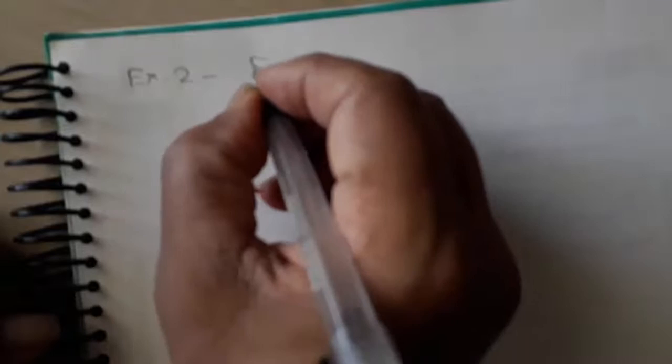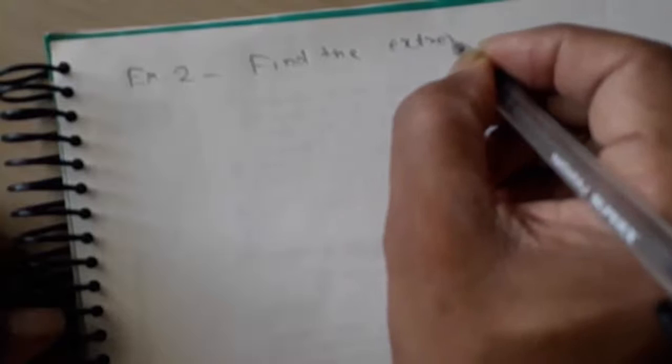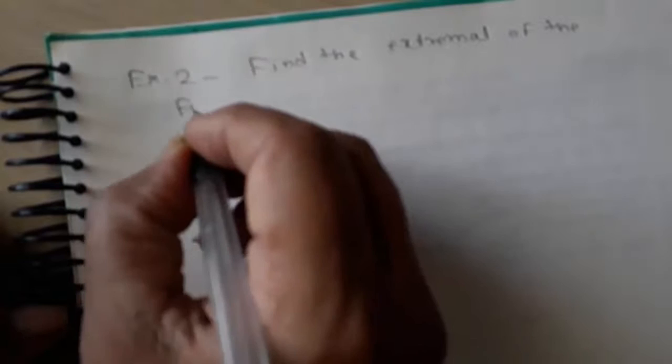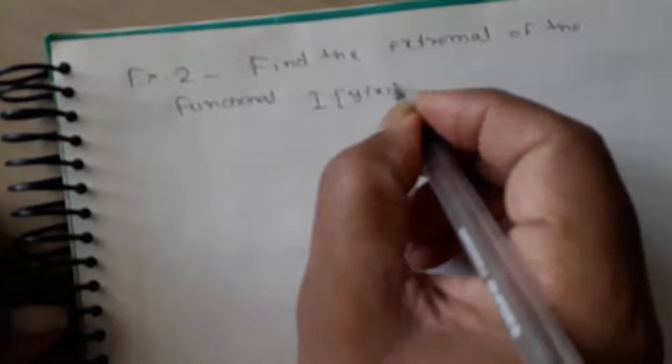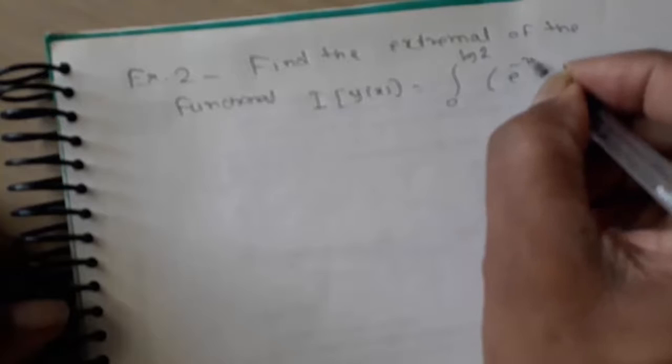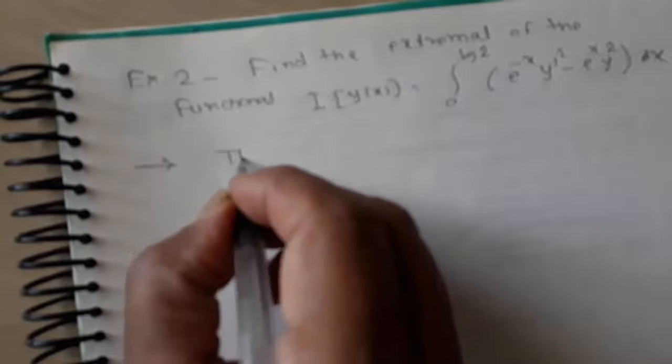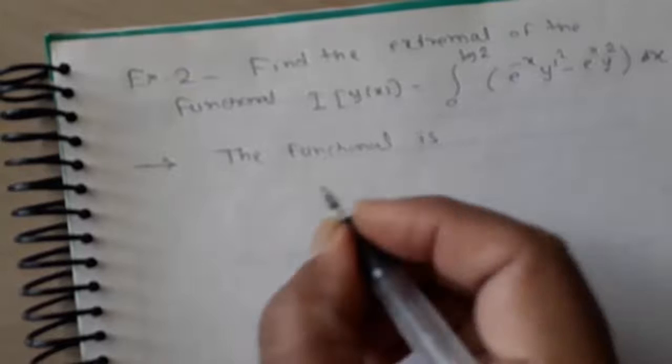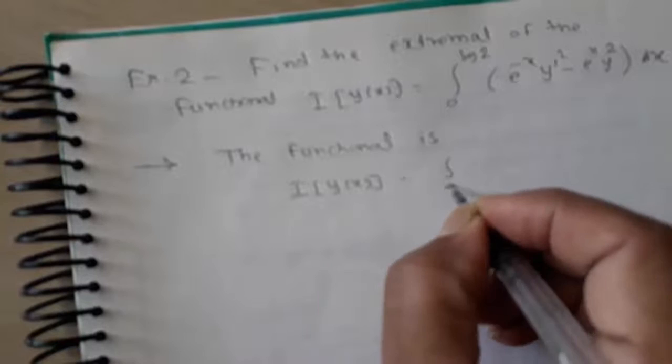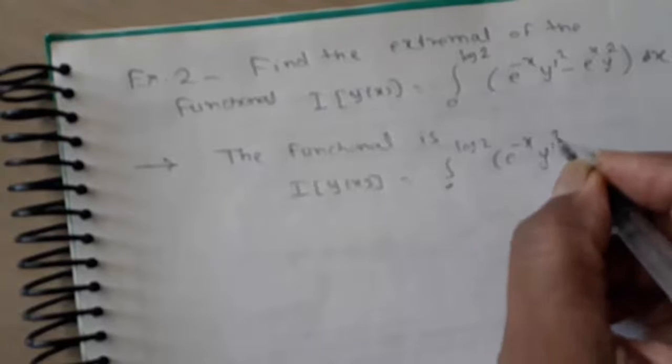Second example: find the extremal of the functional I[y(x)] = integral from 0 to log(2) of (e^(−x)·y'² minus e^x·y²) dx. The functional is given with those limits and integrand.